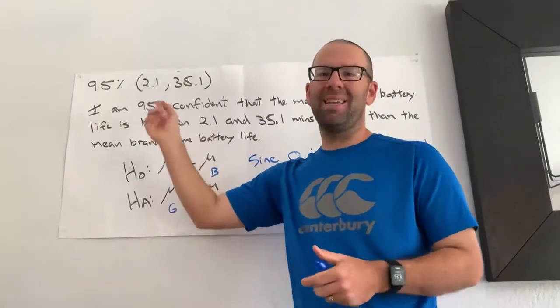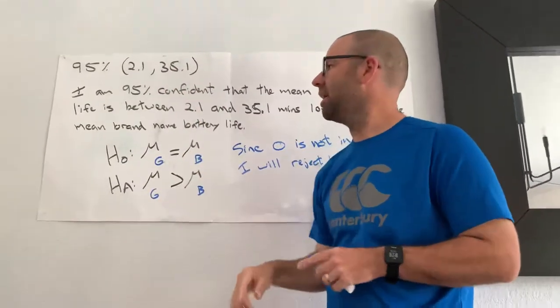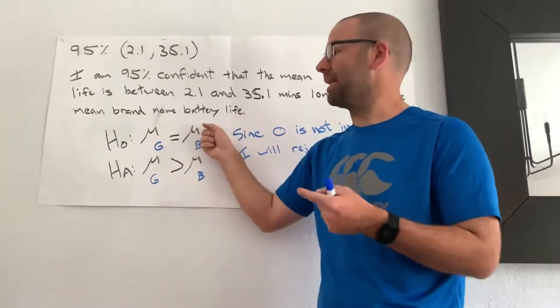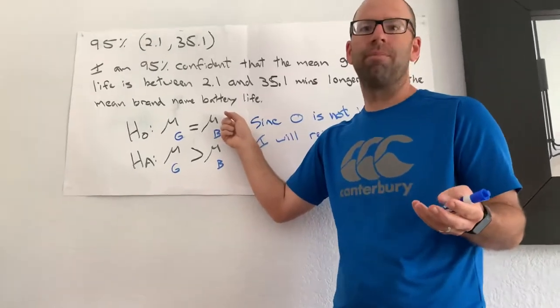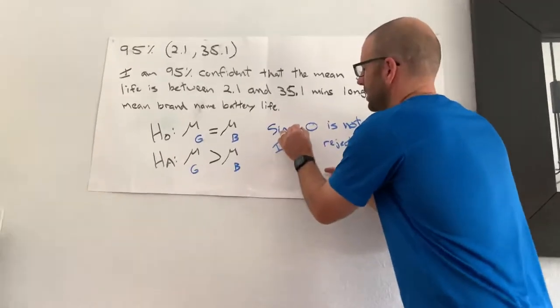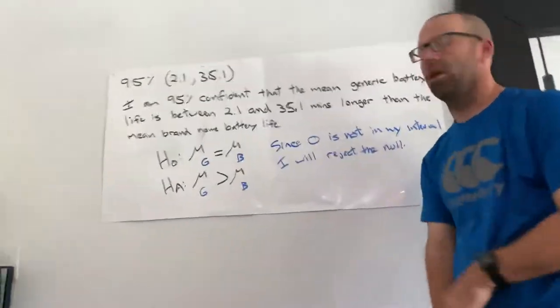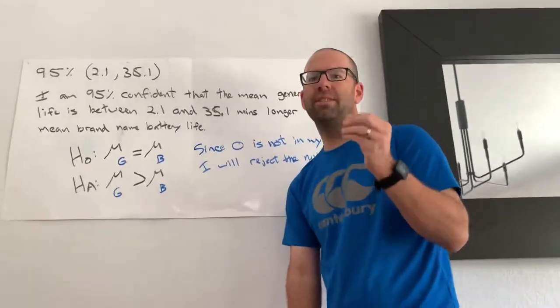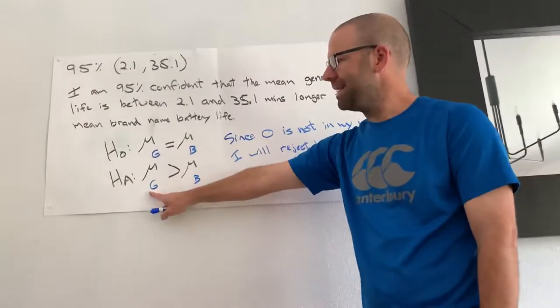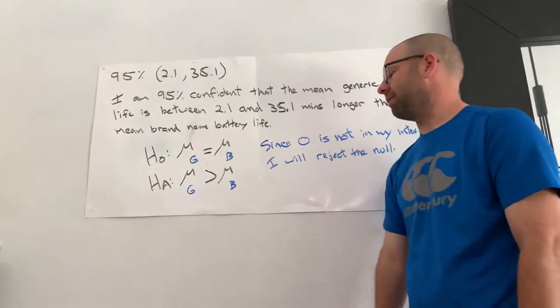And since zero is not in there, in fact, zero is not even close to being in there. Since zero is not in there, I cannot stick with the mean, or excuse me, I'm not going to stick with the null. I'm going to reject the null. So I'll reject the null. So since zero, I didn't put an E in my sense. There we go. Since zero is not in the interval, I will reject the null, which means there is sufficient evidence to show that the mean battery life of generic batteries is greater than the mean battery life of brand name.